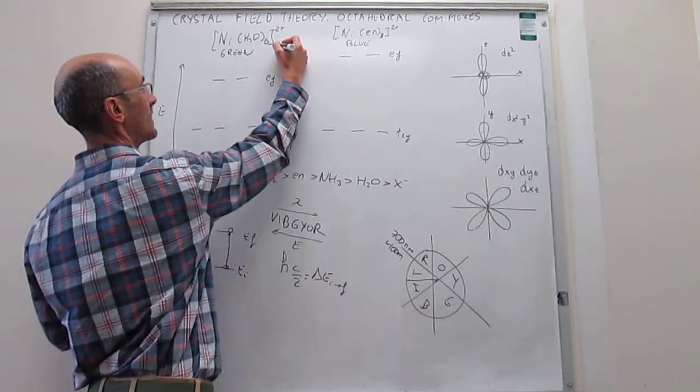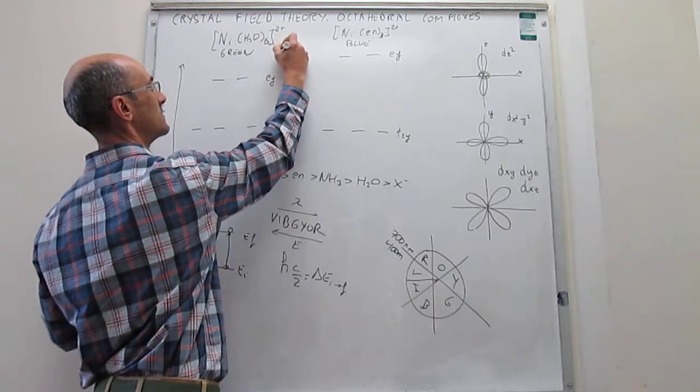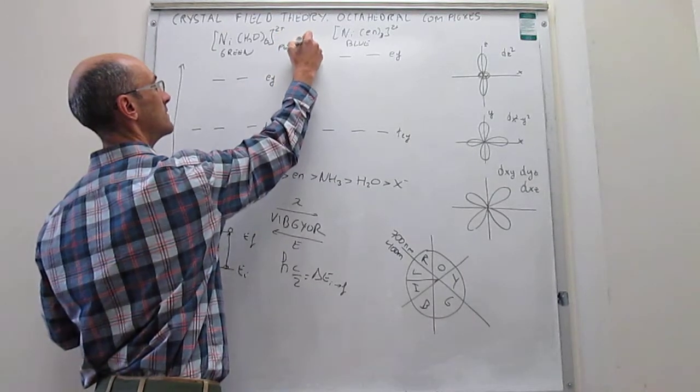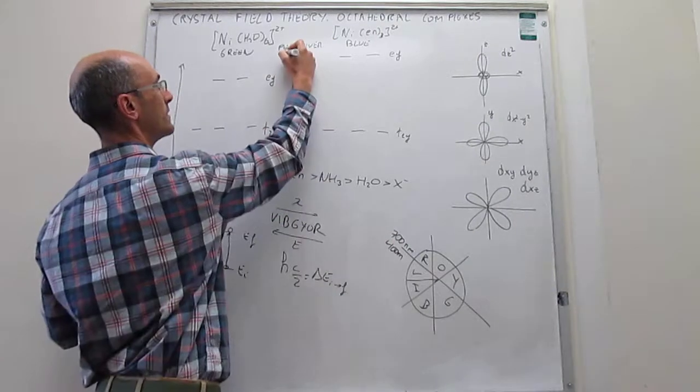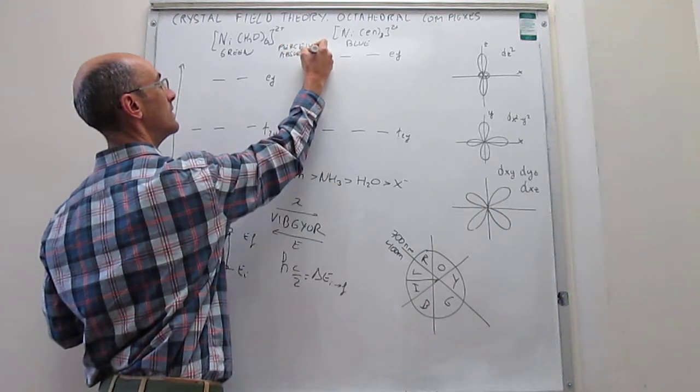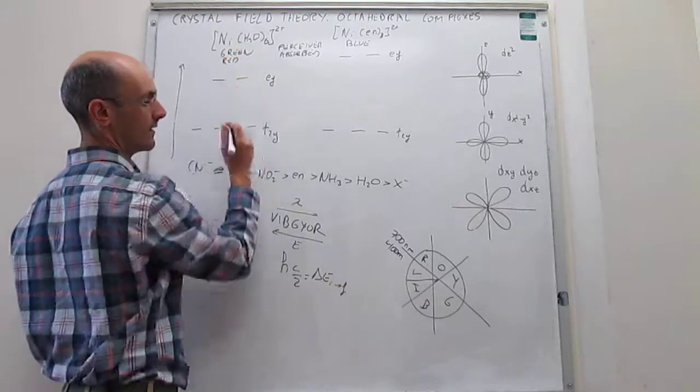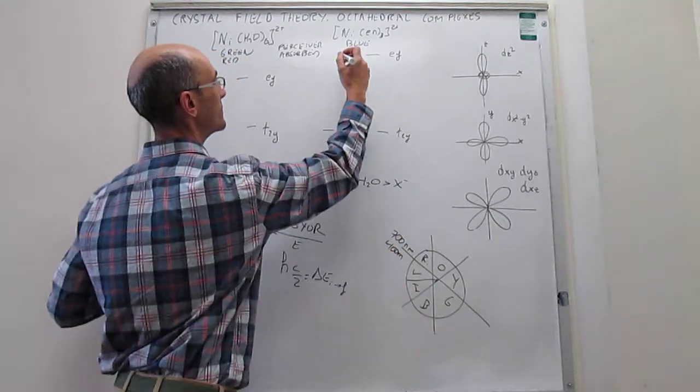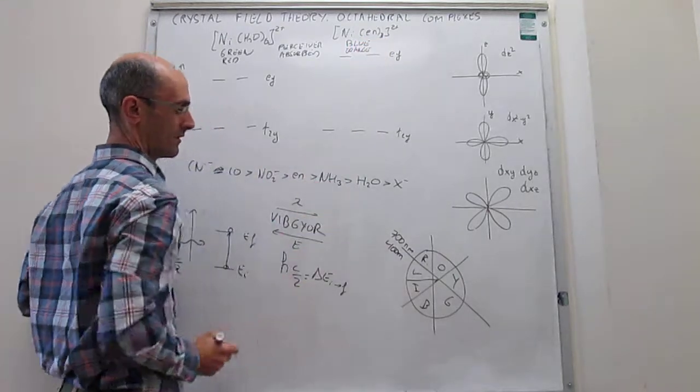Now we actually have all that we need in order to be able to understand this variation in colors for those nickel complexes. Notice that these are the perceived colors, and the absorbed colors, when we look at the color wheel, for green it's going to be red, and then for blue it's going to be orange.